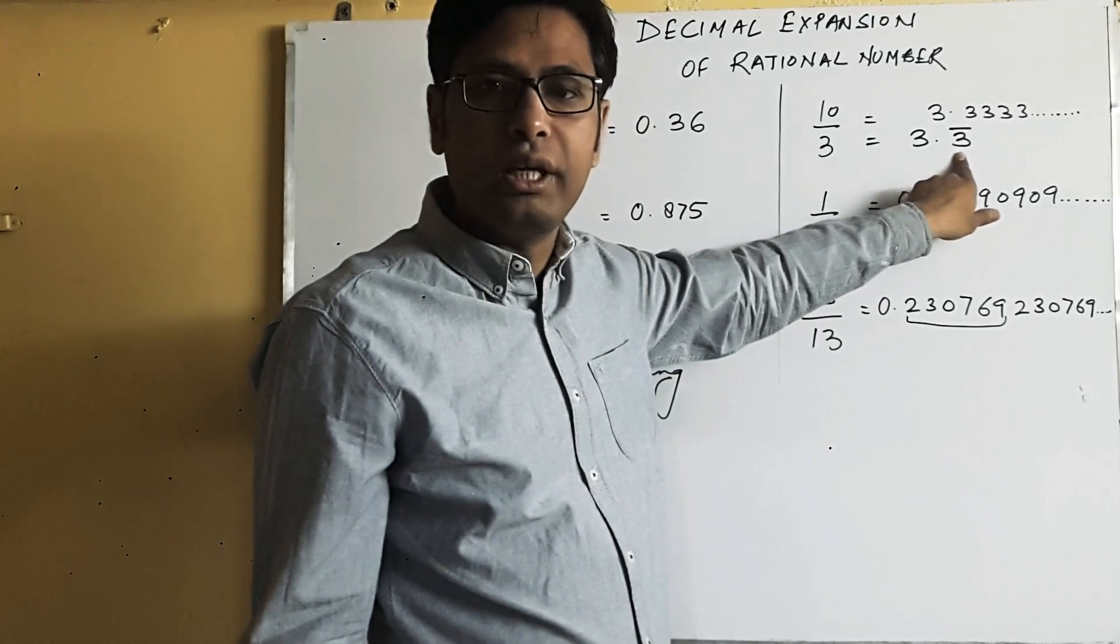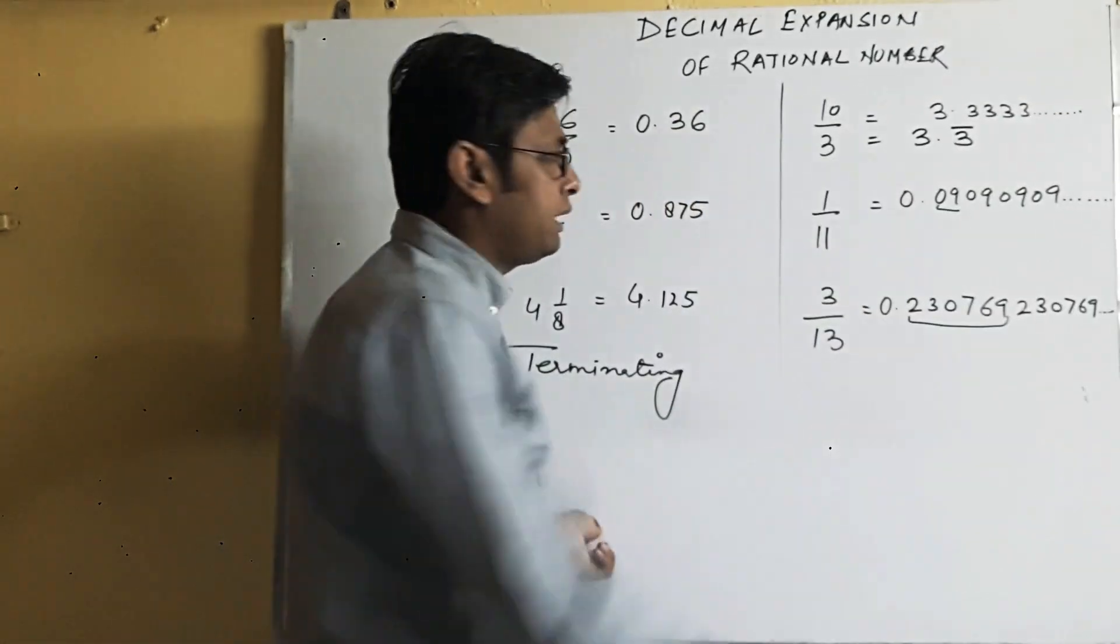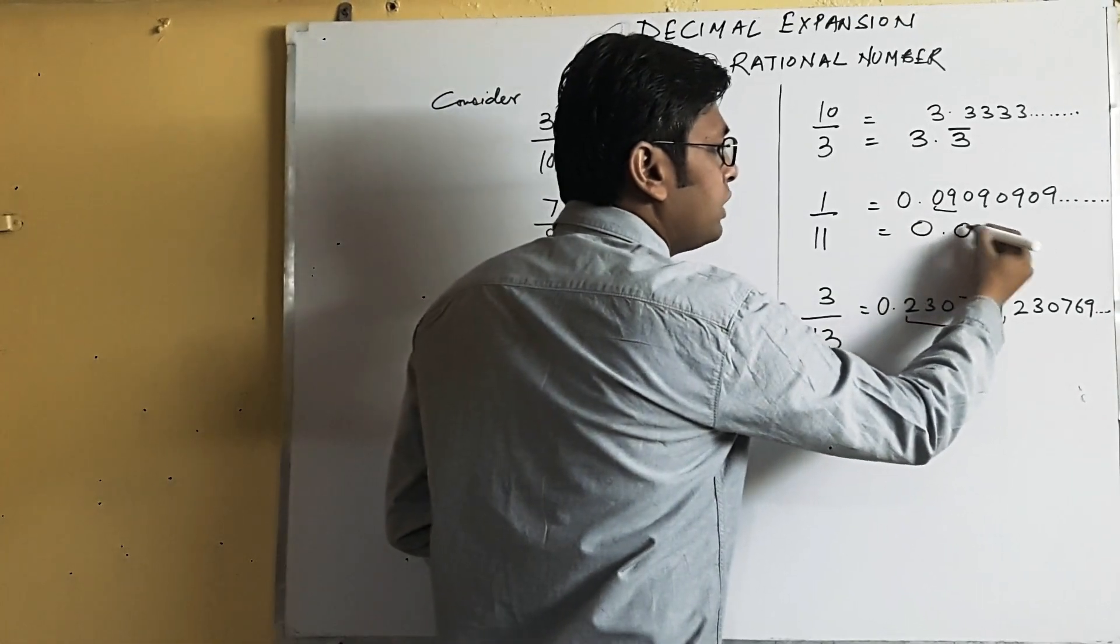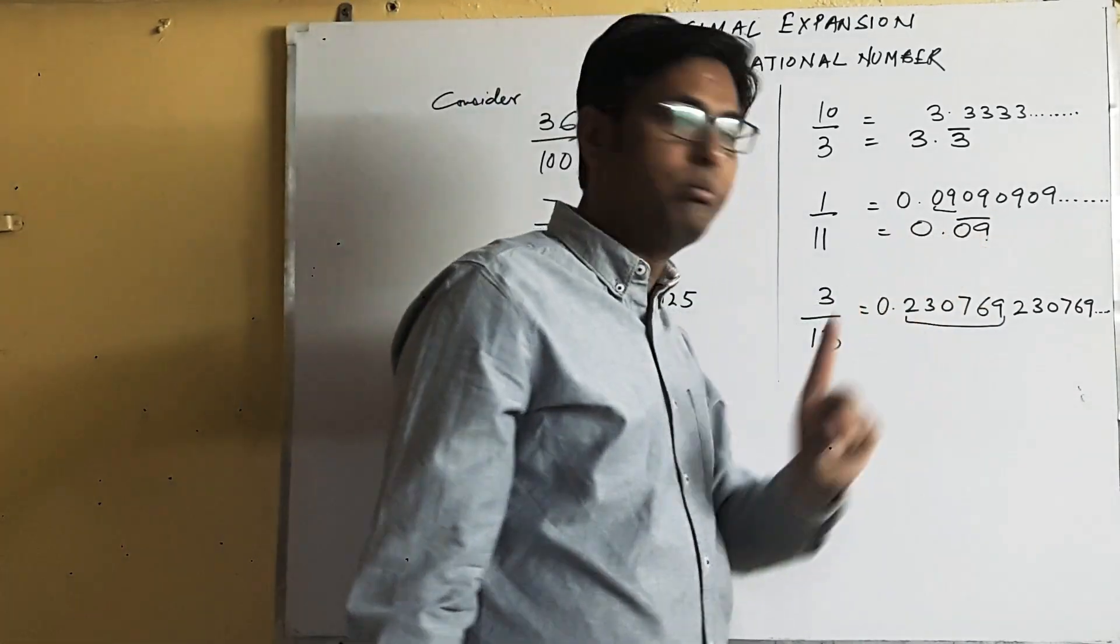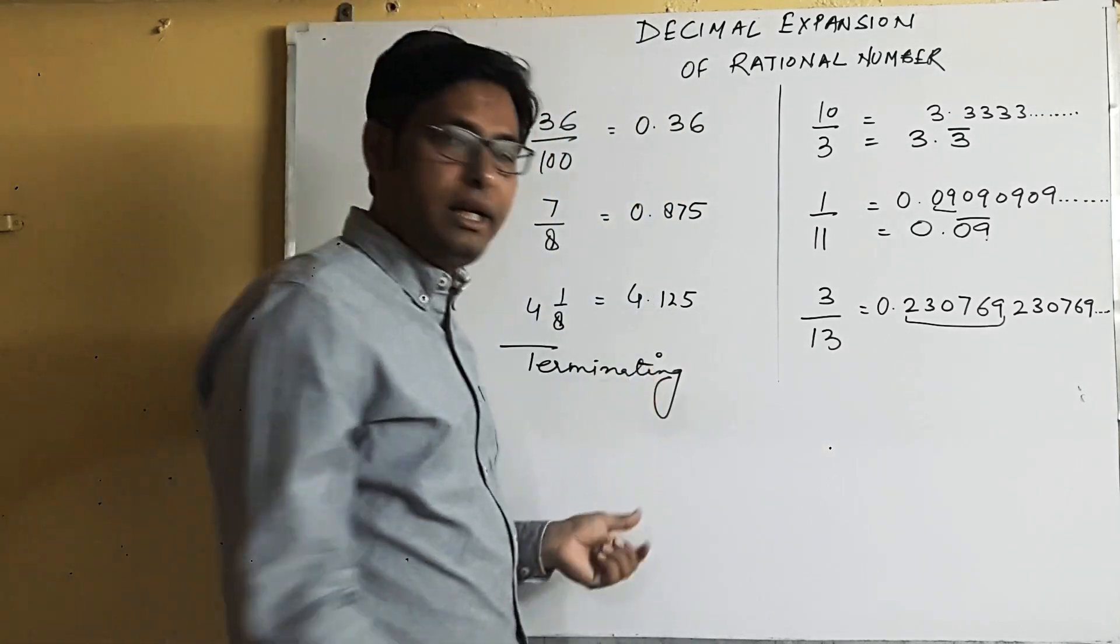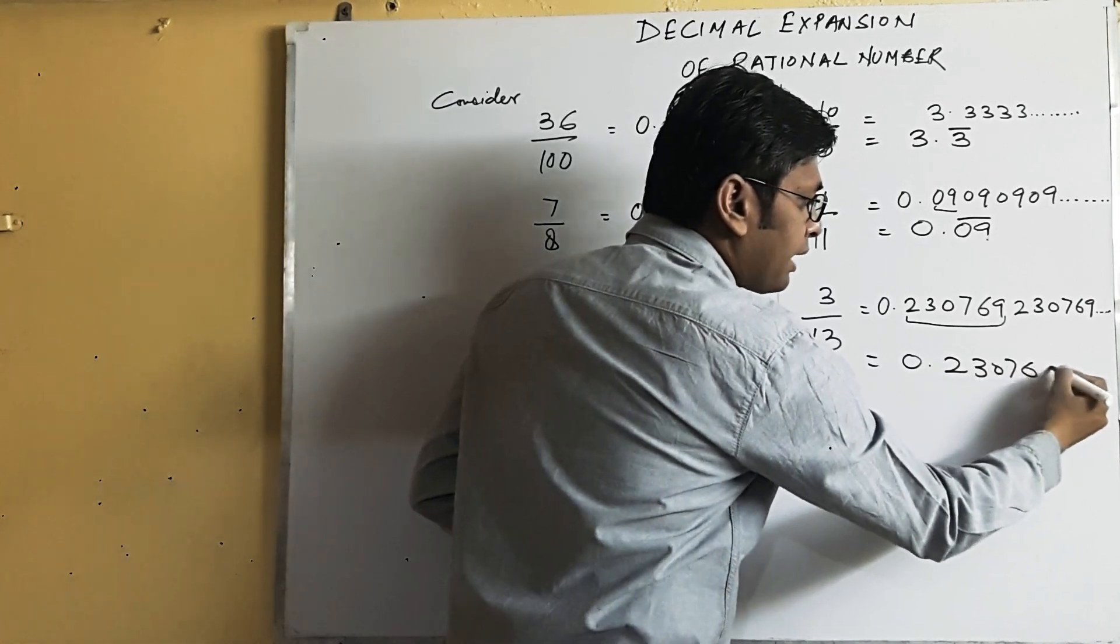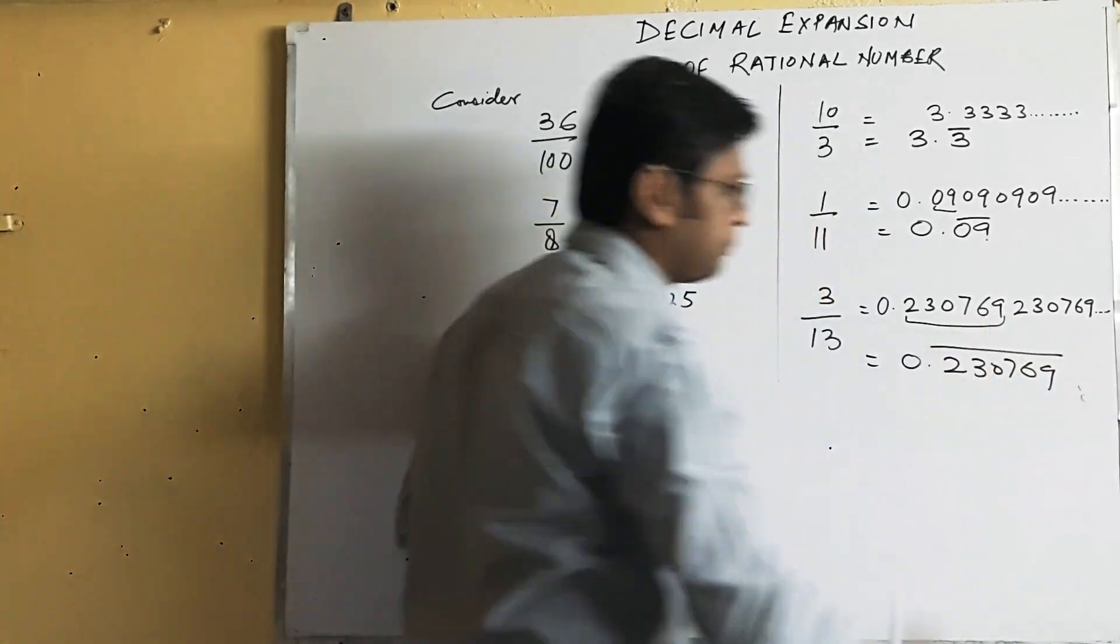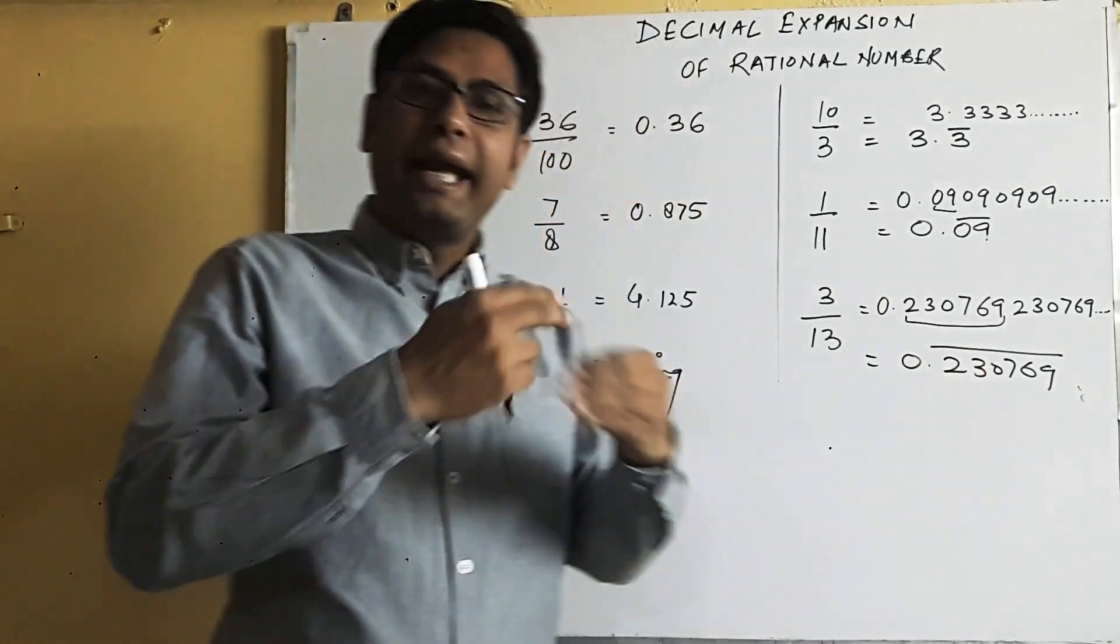Because 3 is repeating, that's why I have put the bar on 3. Similarly, here 09 is repeating, so the answer will be written as 0.09 with a bar. The bar is on 0 and 9 both. Similarly, this full group is repeating, so I will put the bar on the full group.